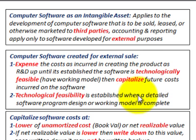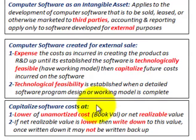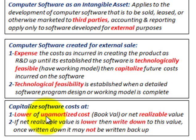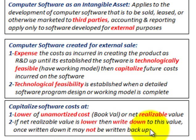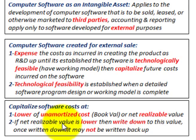Technological feasibility is established when the detailed software program design or working model is complete. We capitalize the software costs at the lower of the unamortized cost — that's the book value established on this software — or the net realizable value. If the net realizable value is lower, then you'd write down this value once, and once it's written down, it may not be written back up. If the net realizable value is lower than your unamortized cost on your books, then you would have to write it down to the net realizable value.